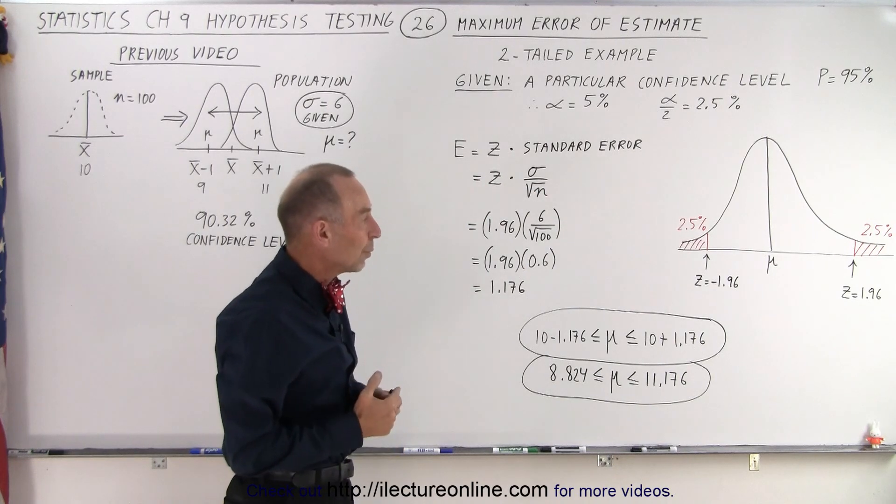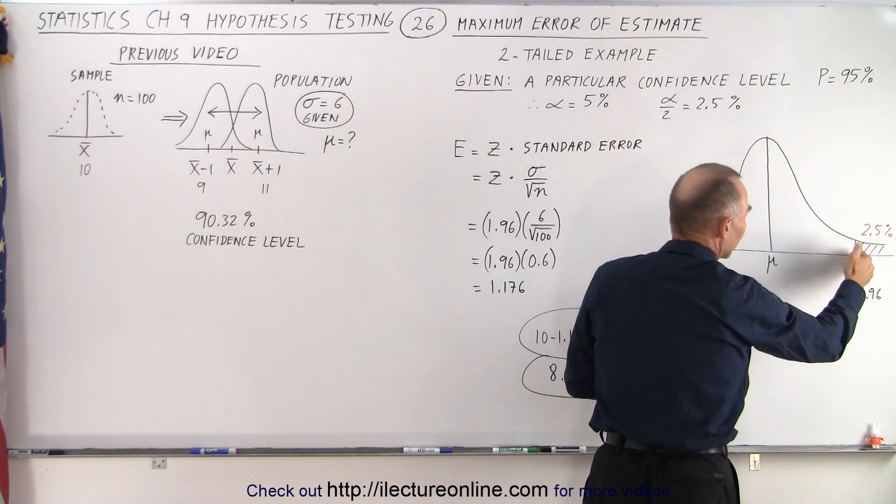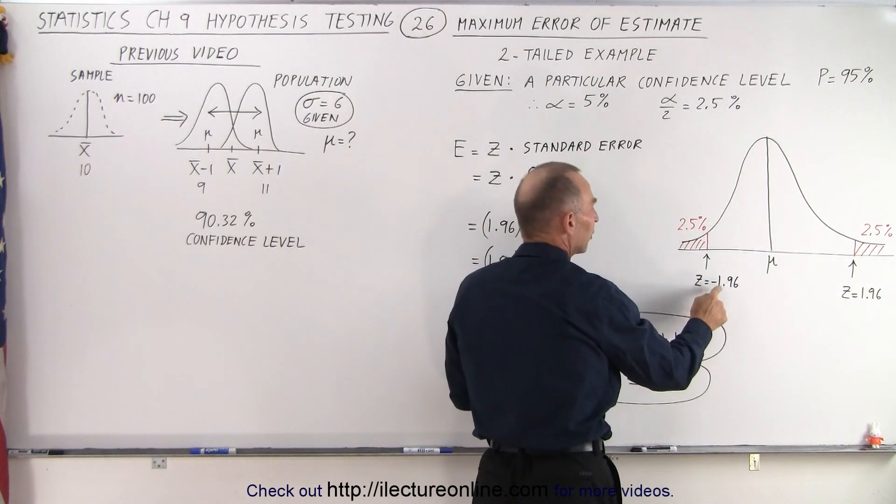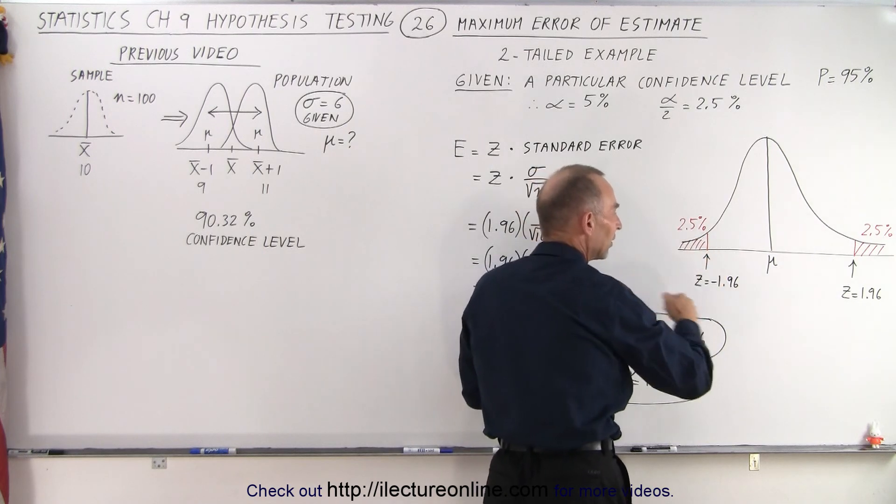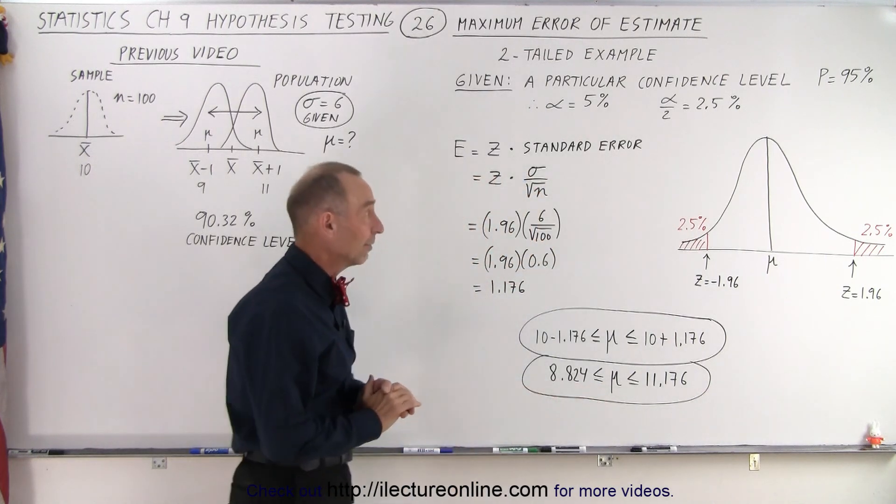So what we need to do now is find the corresponding z-scores for the boundary of the critical area at the high end and the low end, and that ends up being 1.96 on the high end and negative 1.96 on the low end.